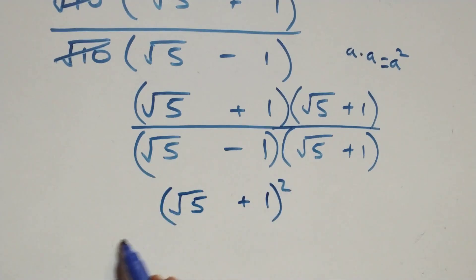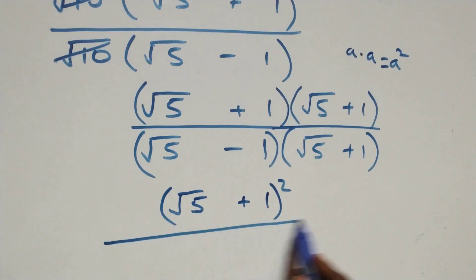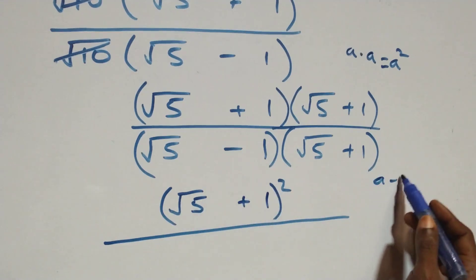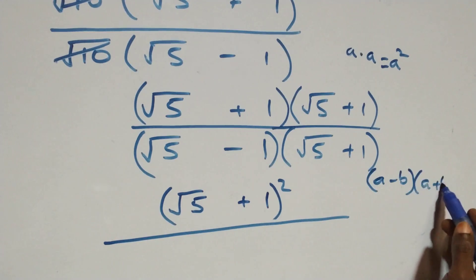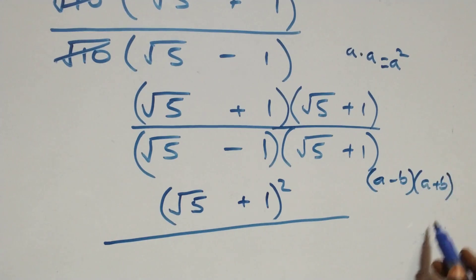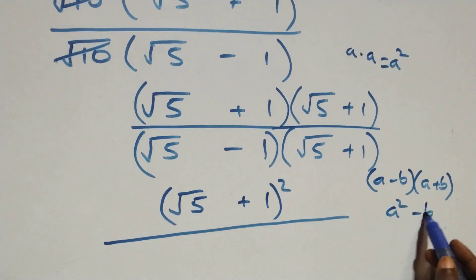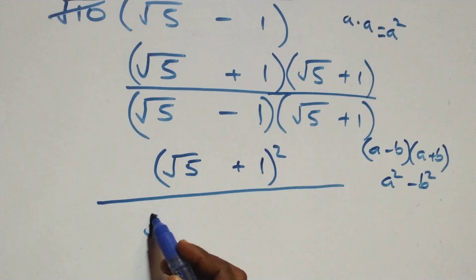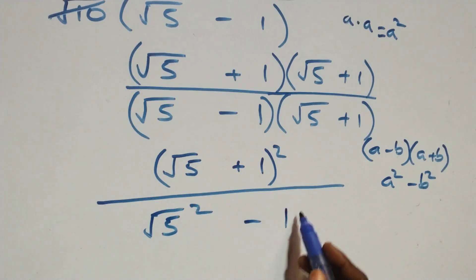For the denominator, we apply the difference of two squares: (a − b)(a + b) = a² − b². So the denominator becomes (√5)² − 1², which gives us 5 − 1.